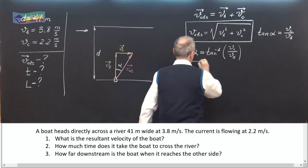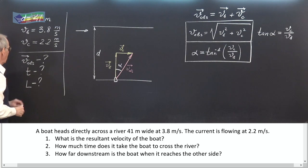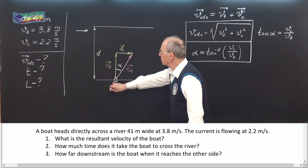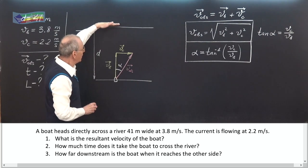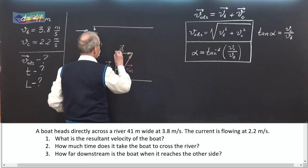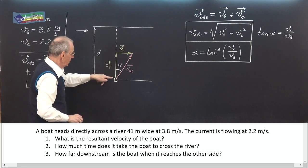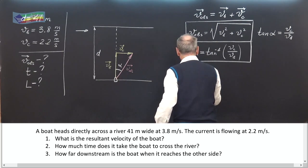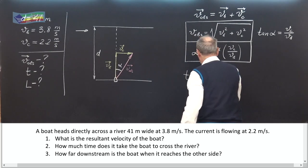Now, concerning time. Imagine you are a boatman sitting in the boat — you see that the opposite bank approaches you at speed Vb. The distance is D and the speed is Vb, so we can write that time T equals D over Vb.